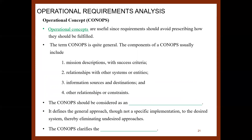The components of a ConOps usually include mission descriptions with their success criteria, the relationships with other systems or entities, information sources and destinations, and other relationships or constraints. The concept of operations should be considered as an addition to the operational requirements — it defines the general approach, though not a specific implementation, to the desired system, thereby eliminating undesired approaches and clarifying the intended goal.